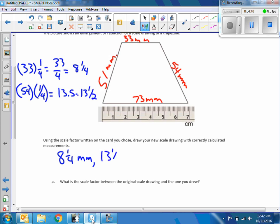These are just my measurements of my new scale. Then I'm going to take the 73 and multiply it by a quarter, which is the same as dividing by 4.